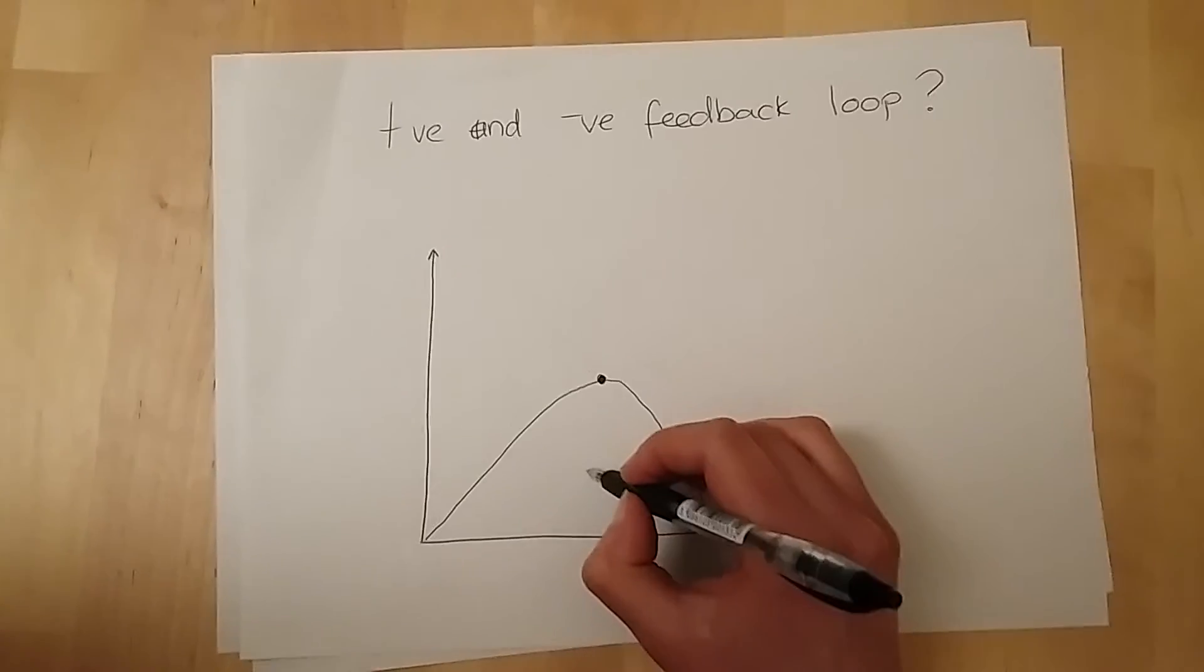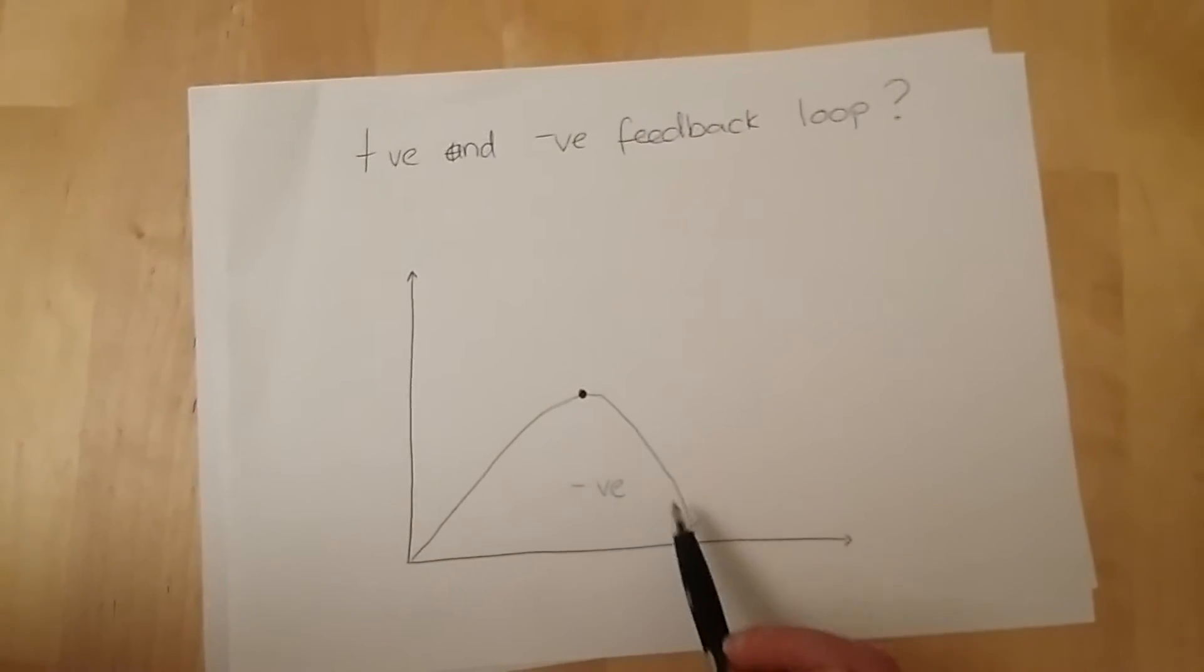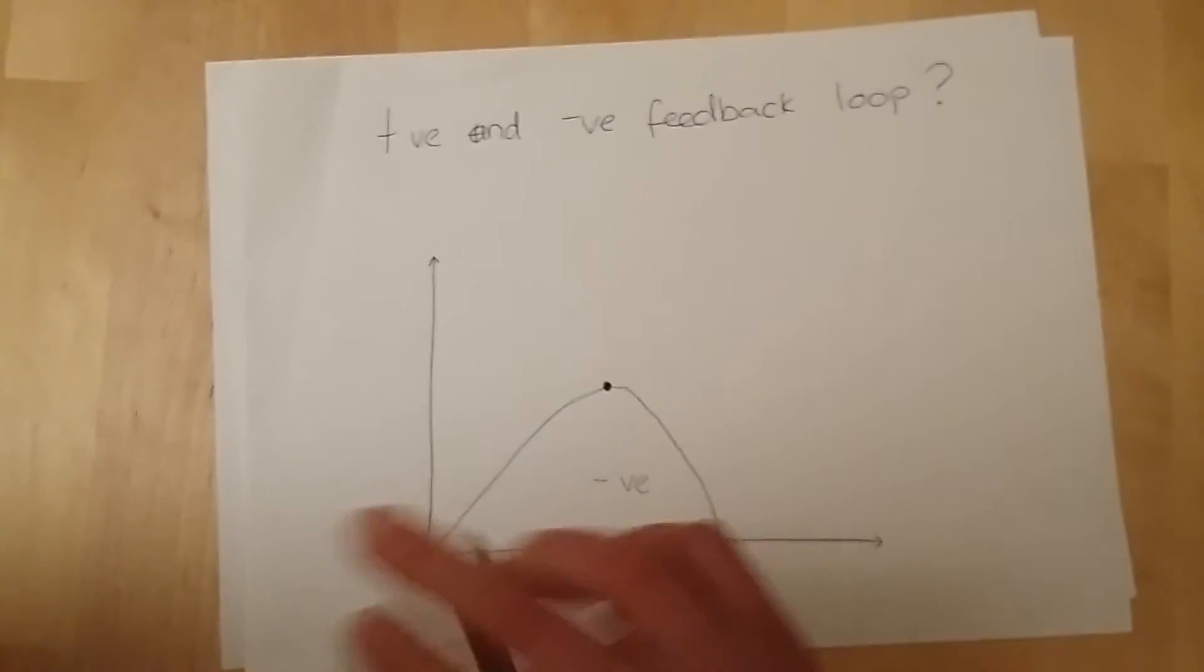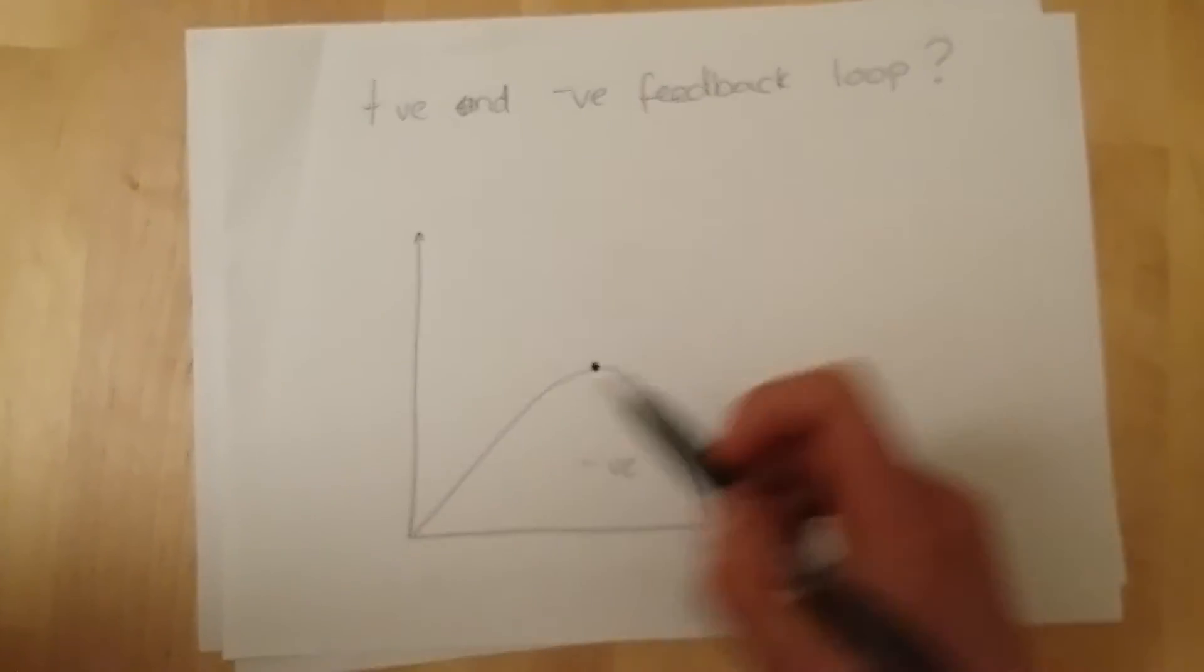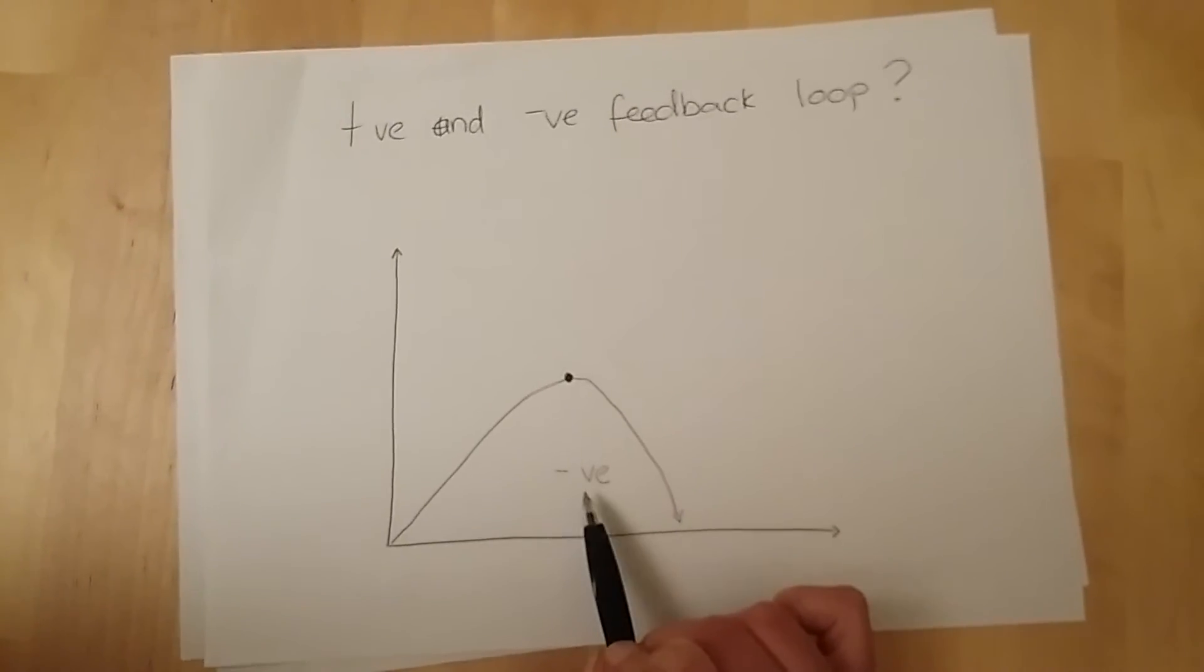It stimulates a negative feedback loop. That's classed as negative because it starts off and then it undoes itself. It sort of rewinds itself back down to homeostasis. So negative takes it back to homeostasis.